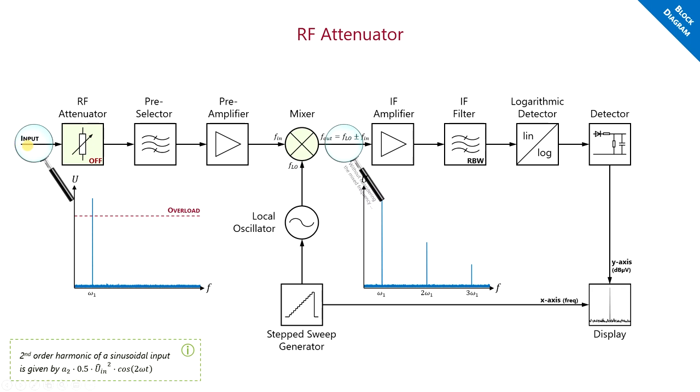The first component, which the input signal sees, is an attenuator. In EMI receivers, this block is often set automatically to prevent an overload of the receiver. You must consider that not just amplifiers can go into compression. Frequency mixers, which also contain active components, can also produce overtones.